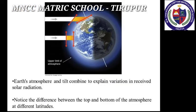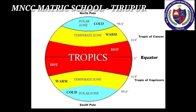Heat zones of the earth: the fact that the earth is spherical in shape results in different parts of the earth getting heated differently. Based on the heat received from the sun, the earth is divided into three heat zones: the torrid zone, the temperate zone and the frigid zone.